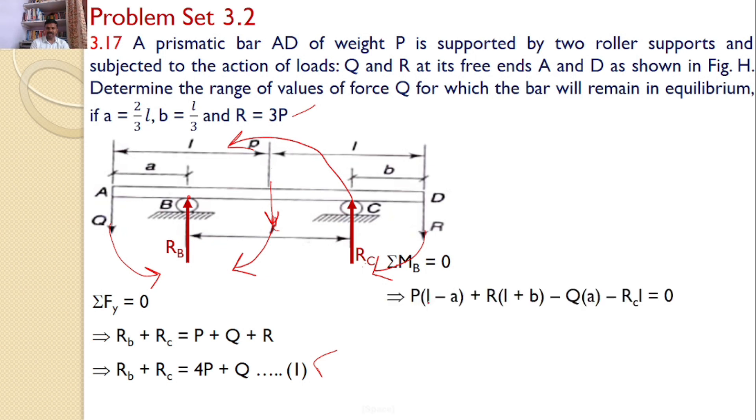Hence, I can write the equation: P times (L minus A) plus R times (L plus B) minus Q times A minus RC times L equals 0. Q and RC introduce moments in one direction, while P and R introduce moments in the opposite direction.